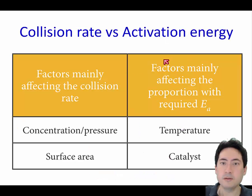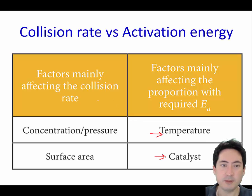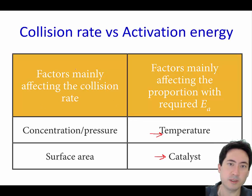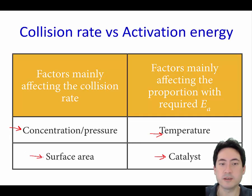So how do you lower this activation energy? The main ways are using a catalyst — which we'll talk about in a minute — and increasing the temperature. The main way to increase the collision rate, which increases the rate as well, is increasing the concentration or pressure, or increasing the surface area.